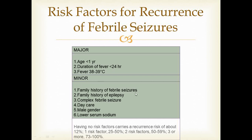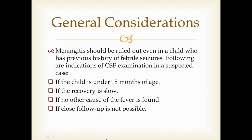Other risk factors include family history of febrile seizures, family history of epilepsy, complex febrile seizures, daycare attendance, male gender, and lower serum sodium. Even with no risk factor, the chance of recurrent febrile seizures is 12 percent. With one risk factor, chances are 25 to 50 percent; with two risk factors, 50 to 59 percent; and with three or more, 73 to 100 percent.